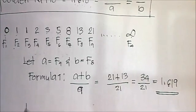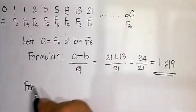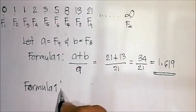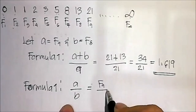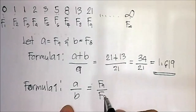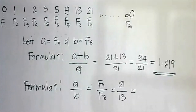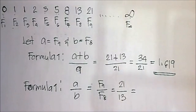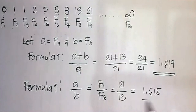For Formula 2, we use A over B, which is F sub 9 over F sub 8 — that is 21 over 13. Using a calculator, 21 divided by 13 equals approximately 1.615.